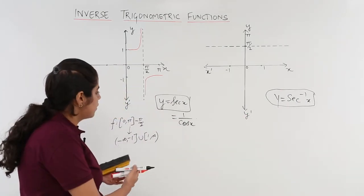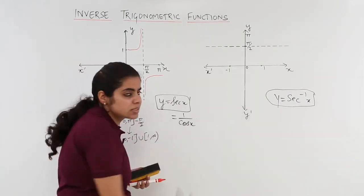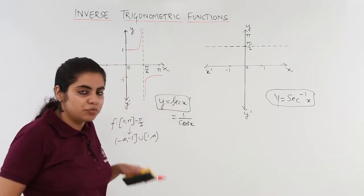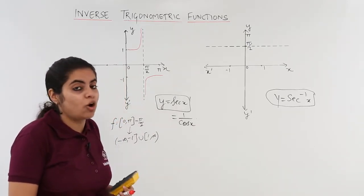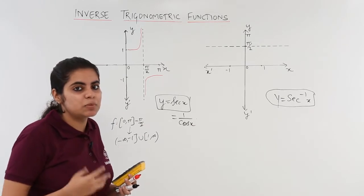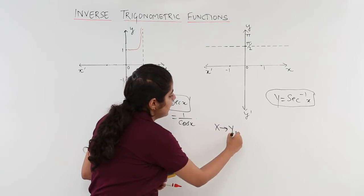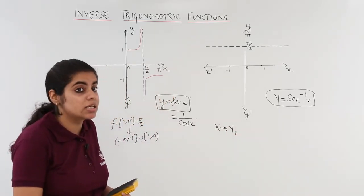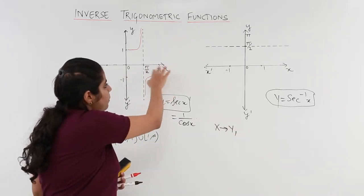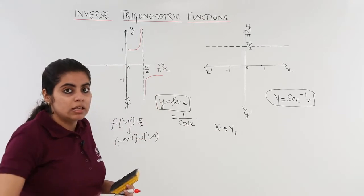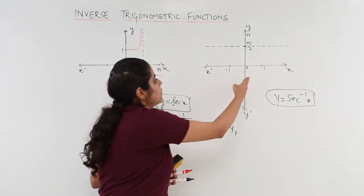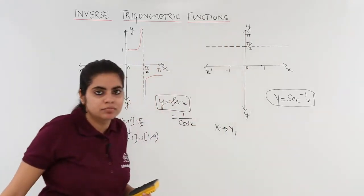So what happens for secant inverse x? Secant inverse x will be obtained by following again how many steps? Three simple steps. By now you might have learned these three steps that interchange x-axis with y-axis. So where is x-axis? x-axis is 0, pi, 0, 2, pi. Interchange it with y. Now my y becomes 0, 2, pi. Understood?